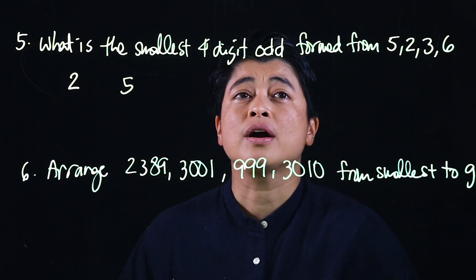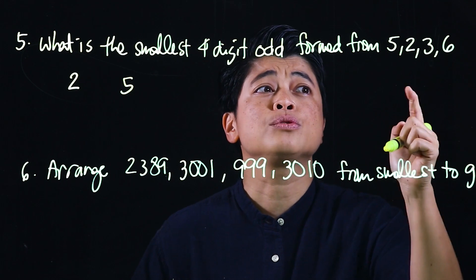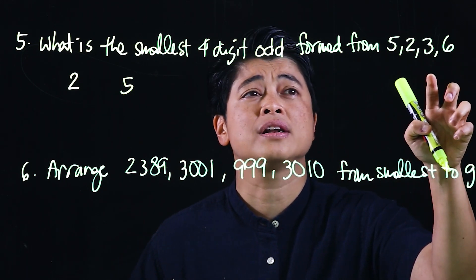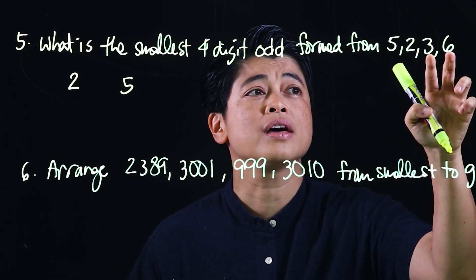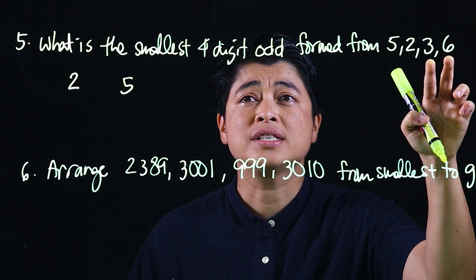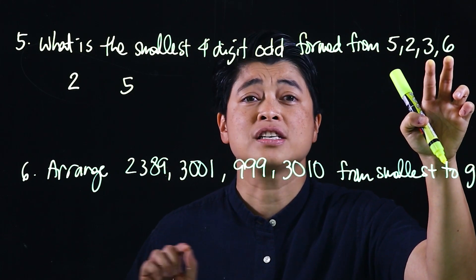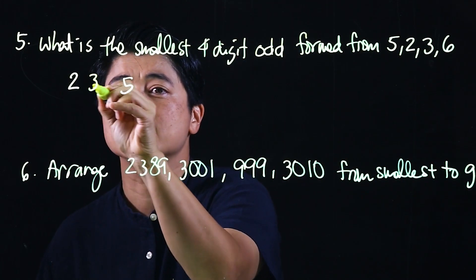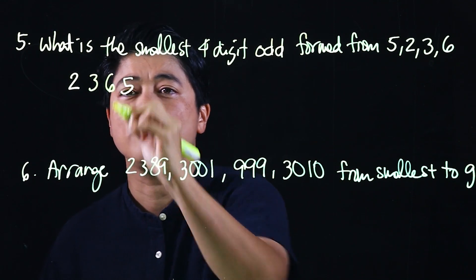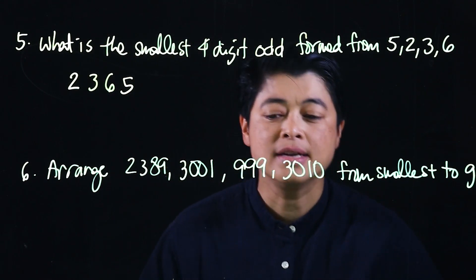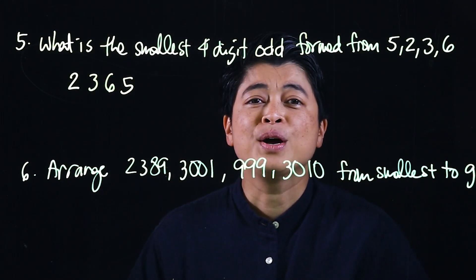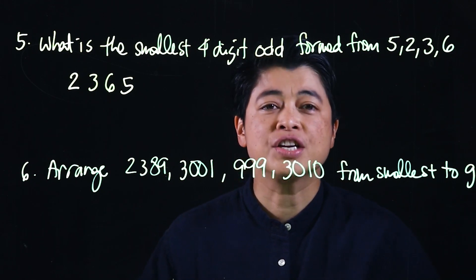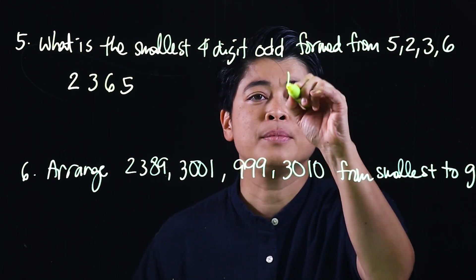Then we need to arrange the other two numbers left over, which are three and six. Since we want the smallest number, three comes first, followed by six. So the smallest four-digit odd number is 2, 3, 6, 5.